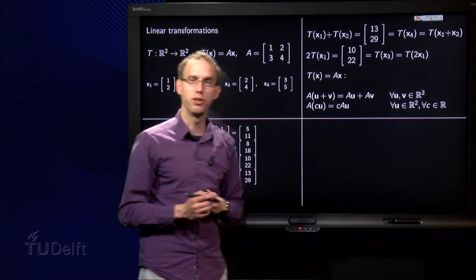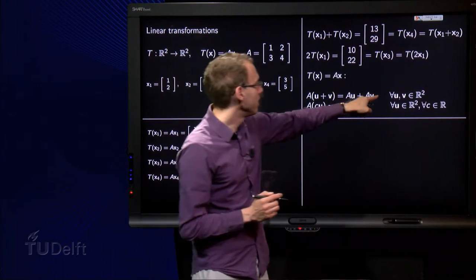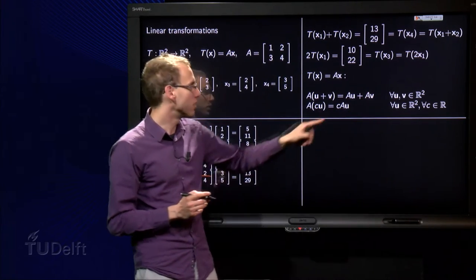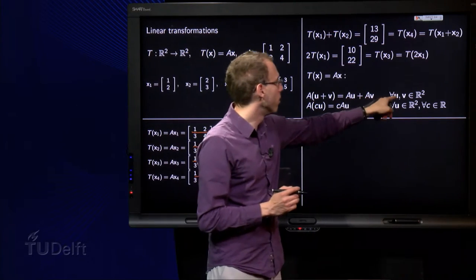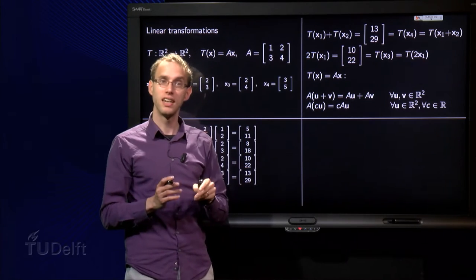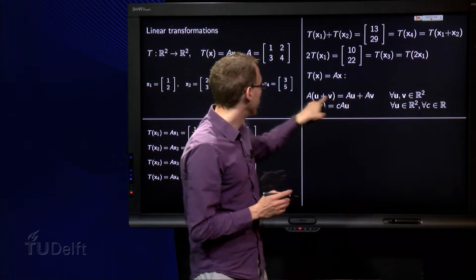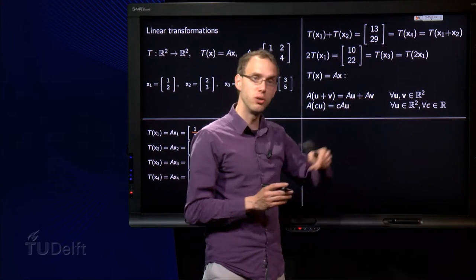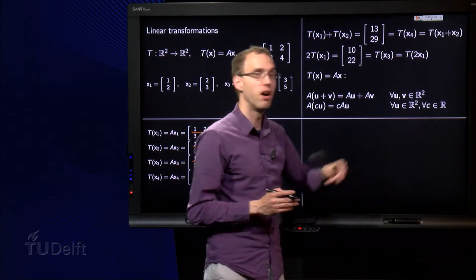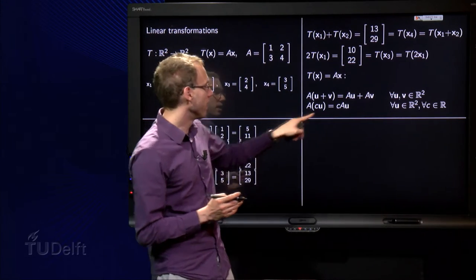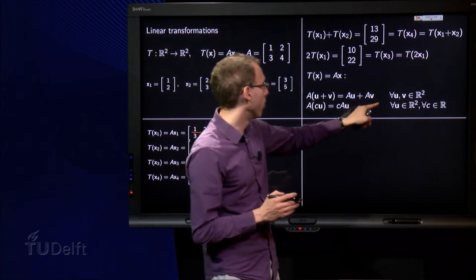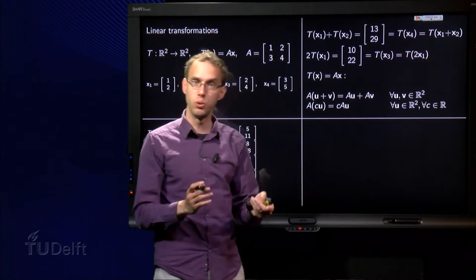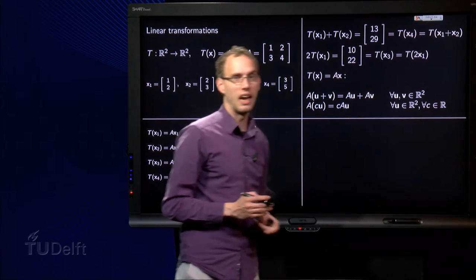And then we have here some strange signs. This capital A reversed is the short symbol for all. u and v and this zero sign means element of. So this holds for all vectors u and v which are element of R2. And here we see something similar. This rule over here holds for all vectors u in R2 and for all scalars c.